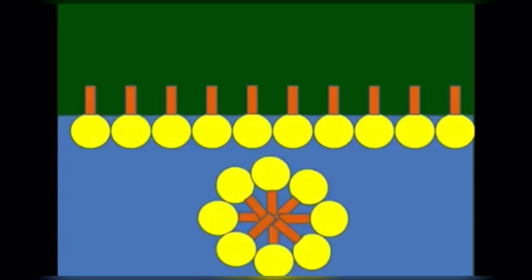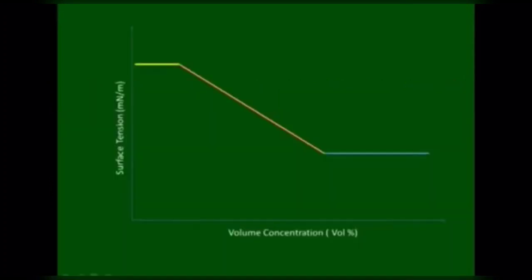As the concentration becomes even higher, micelles begin to form in the bulk of the solution, but the surface tension stays the same. This is referred to as critical micelle concentration formation.